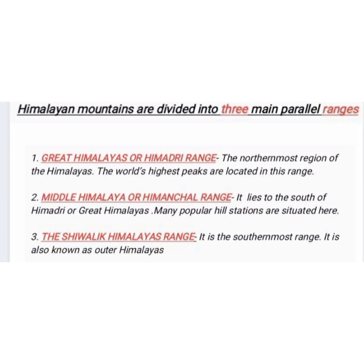The third range is the Shivalik Himalayas. It is the southernmost range and is also known as the Outer Himalayas.